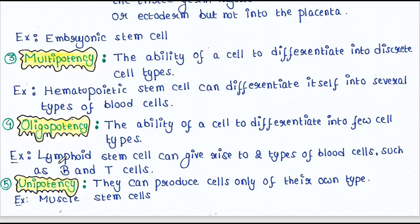The lymphoid stem cell has lesser potency compared to the hematopoietic stem cell, since hematopoietic stem cells can differentiate into many blood cells, but lymphoid stem cells can form only two types: B cells and T cells.